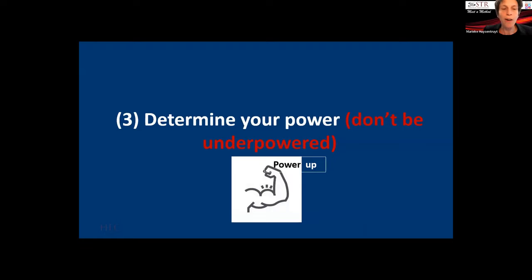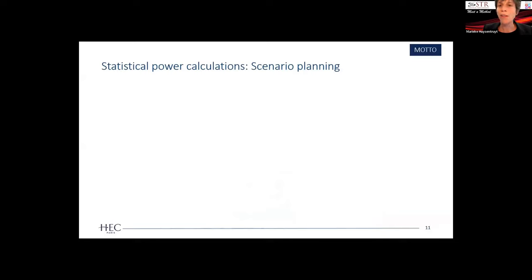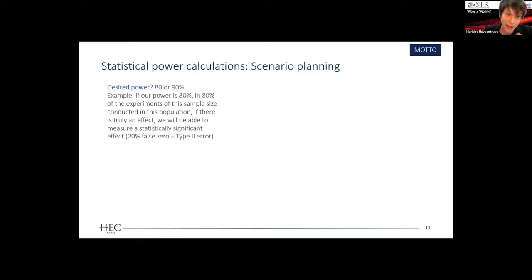Third element: determine your power, and don't be underpowered. This is a real disaster and a true challenge with field experiments — after all the hard work, you may find you don't have enough power to identify any meaningful effects. As Vanessa showed, sample sizes shrink through the process. So do power calculations before running your experiment — when you register, you're actually asked to do this. When doing power calculations, you set a number of parameters.